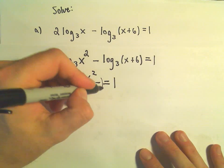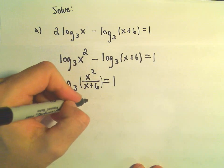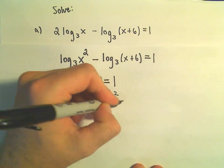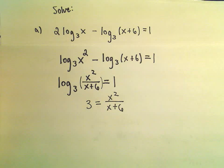And now what I'm going to do is just rewrite this using properties of exponents. So it says 3 to the first would equal x squared over x plus 6. Now we've gotten rid of the logarithms.